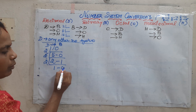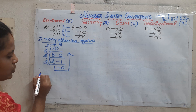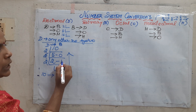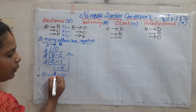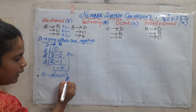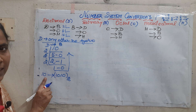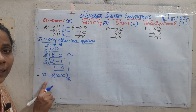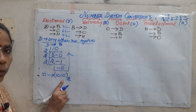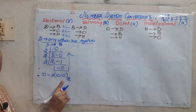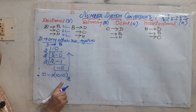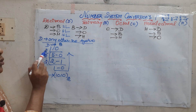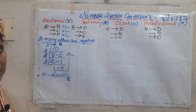Successively divide: 2 twos are 4, remainder 1; 2 ones are 2, remainder 0. So the number 10 is equivalent to 1010 in binary. In decimal it is not necessary to put the radix, but for all other number systems you have to put the radix. Just successively divide by whatever is the radix of that particular number system.